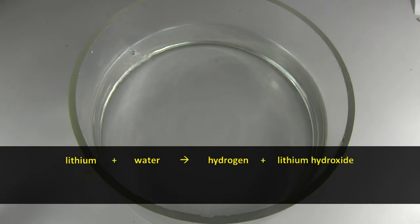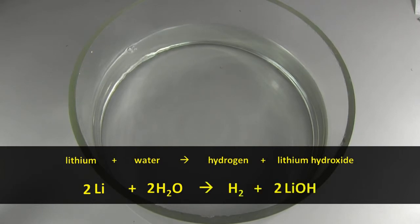which remains dissolved in the water, so we can't see it. In symbols, 2Li plus 2H2O produces H2 plus 2LiOH.